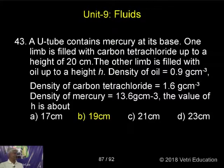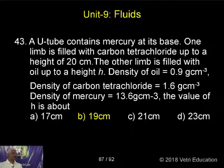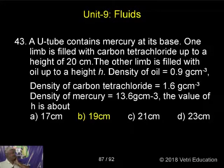A U-tube manometer contains mercury at its base. One limb is filled with carbon tetrachloride (CCl4) up to a height of 20 cm. The other limb is filled with oil up to a height of 10 cm. The density of oil is given, the density of carbon tetrachloride is given, and the density of mercury is given.